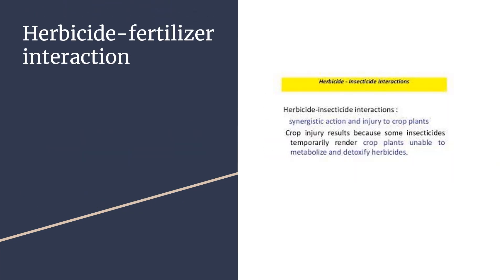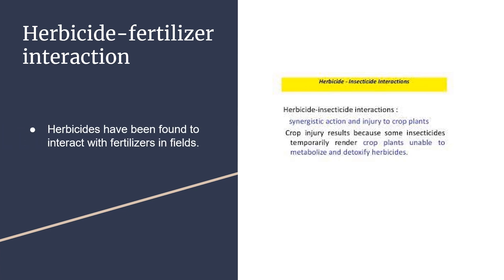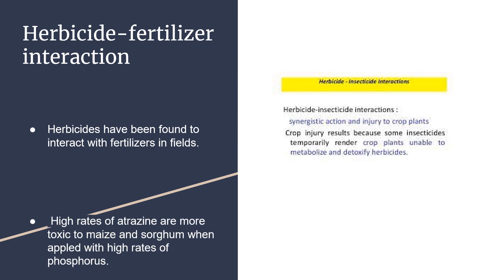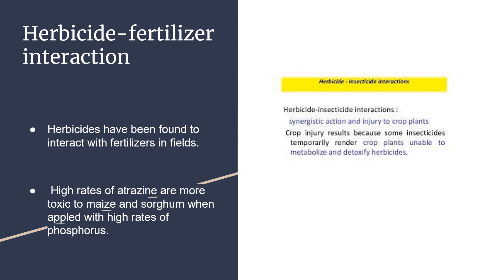Herbicide-Fertilizer Interaction: Herbicides have been found to interact with fertilizers in the fields. High rates of atrazine are more toxic to maize and sorghum when applied with high rates of phosphorus.